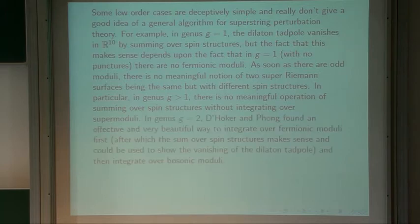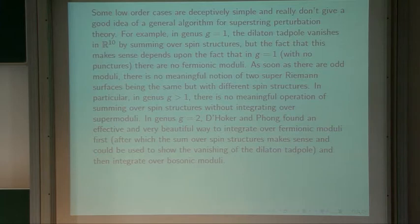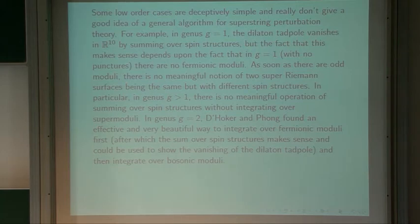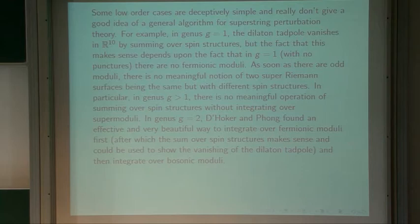In genus 2, D'Hoker and Phong found an effective and beautiful way to integrate over fermionic moduli first. After integrating over fermionic moduli it does make sense to sum over spin structures, and they showed that this sum could be used to establish the vanishing of the dilatino tadpole, or the cosmological constant. This makes sense and is correct in genus 2, but it will not generalize to higher orders. Their calculation is currently the gold standard, but for generic genus their procedure has no analog — the only natural operation is the combined integral over all bosonic and fermionic moduli.